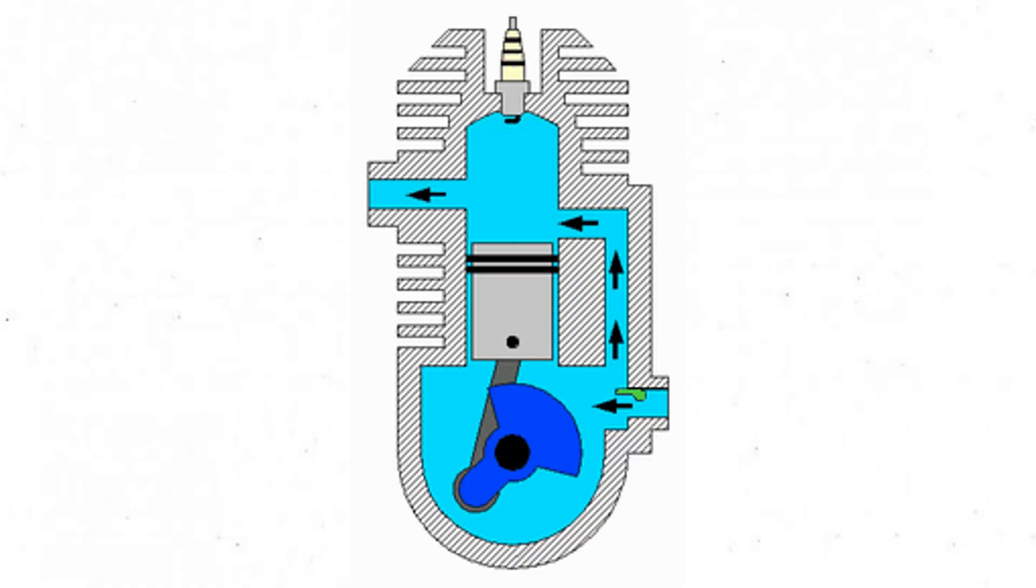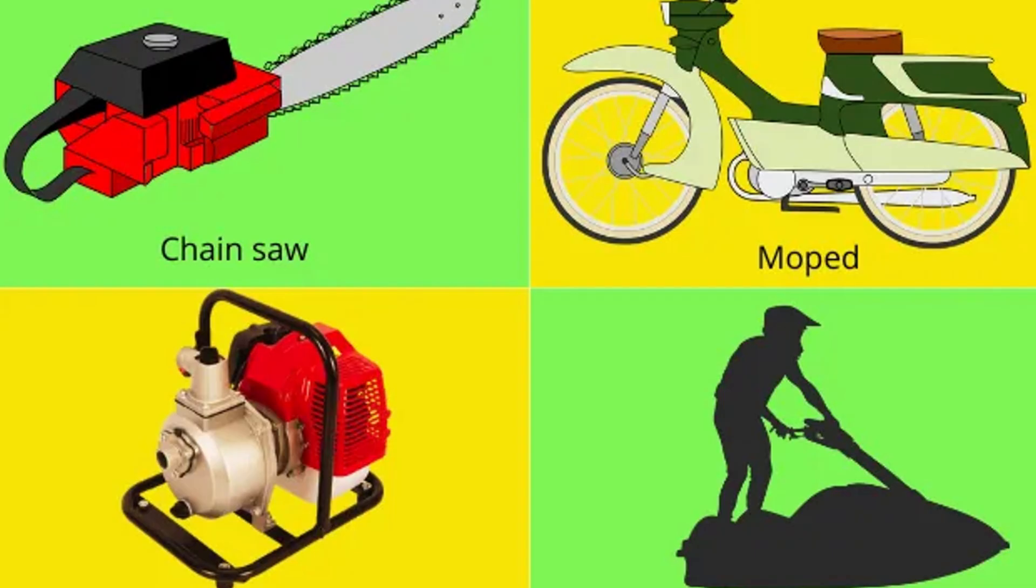This makes two-stroke engines very powerful for their size and weight. They're simple, lightweight, and often cheaper to make. That's why they're used in chainsaws, scooters, dirt bikes, and small tools.